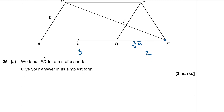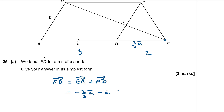E to D is going to be E to A plus A to D. We know that E to A is going to be minus 2 thirds of A, minus another A plus B. So I've got minus 2 thirds and another minus 1, which makes minus 5 thirds altogether. So it's going to be B minus 5 thirds of A.